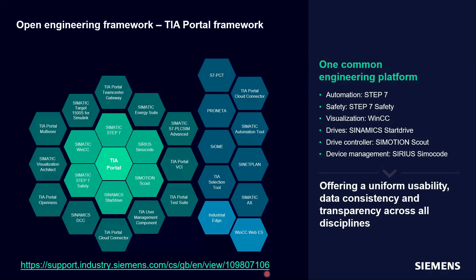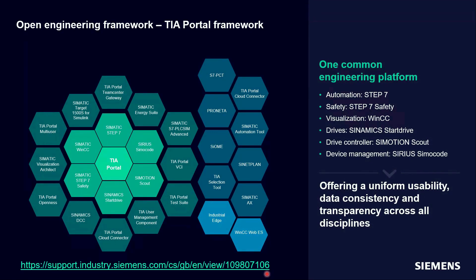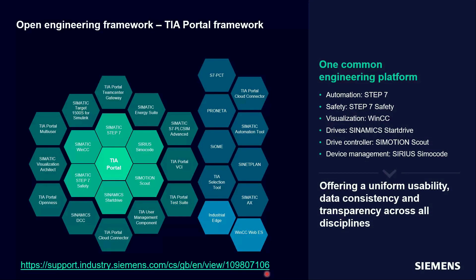That link includes Step 7 Safety Unified, Startdrive, and so on. Simocode DS and Safety, Sirius Safety aren't yet released, but if you go to the Siemens Industry Online Support homepage you'll find how-to videos. Using those, you can register for updates and as soon as the software becomes available you'll automatically get sent a link to it.